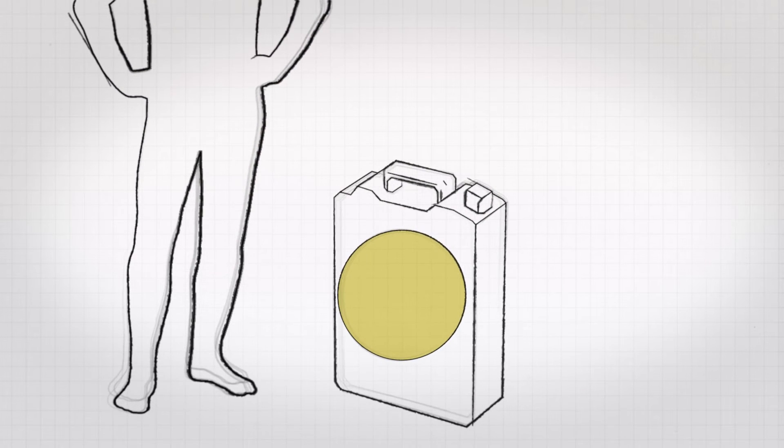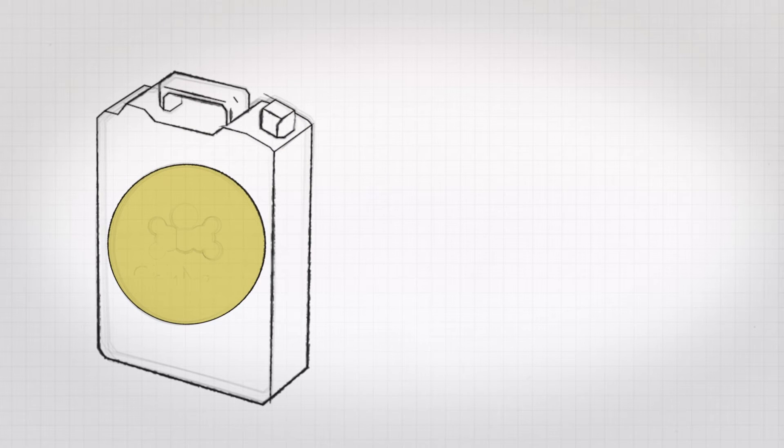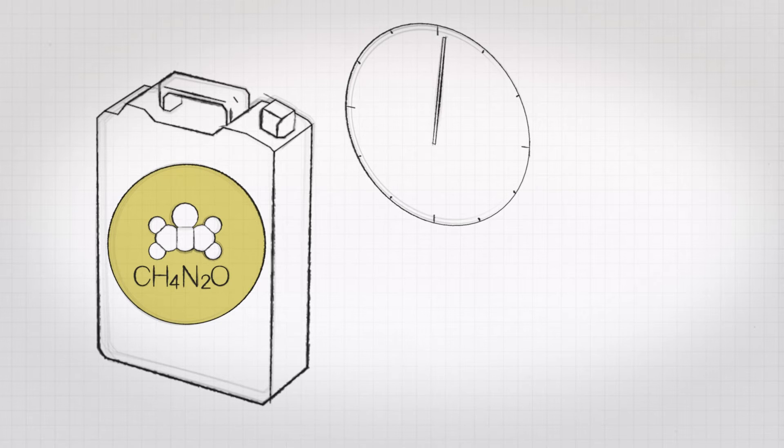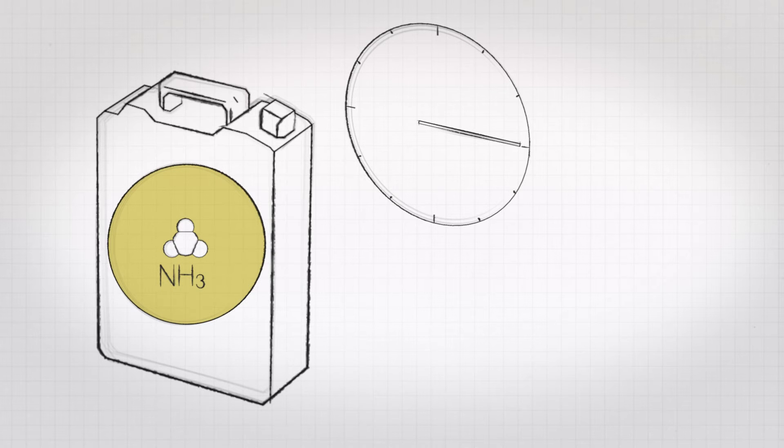In urine, together with most of the other nutrients, nitrogen is present as urea. When the urine is exposed to the environment, urea is spontaneously converted by bacteria into ammonia.